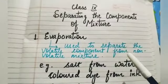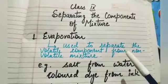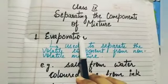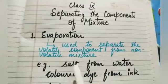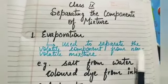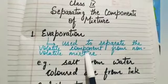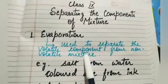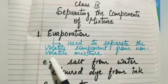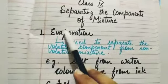There are many techniques by which we can separate the components of mixture. The first one is evaporation. Evaporation is used to separate the non-volatile component from the volatile component. If one component is volatile and the other is non-volatile, then we can use this technique — evaporation.